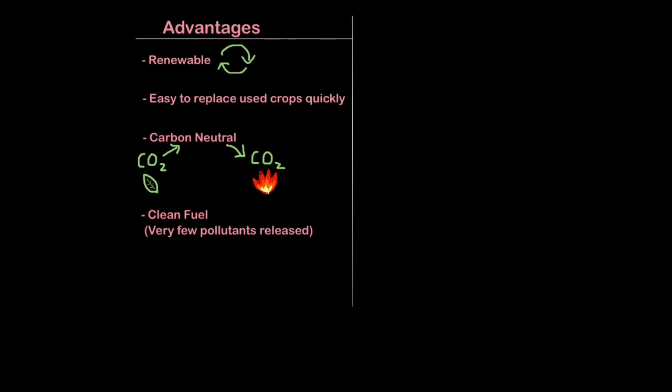It's a relatively clean fuel with very few pollutants being released, so very low amounts of sulphur dioxide or nitrogen dioxide which can cause acid rain. And obviously manure and plants are pretty cheap so it's cost effective.